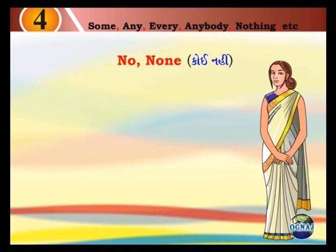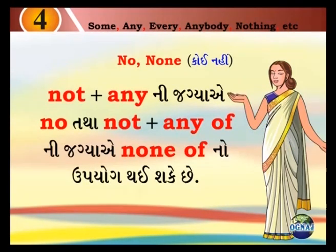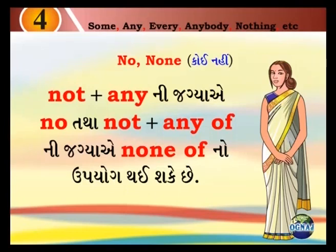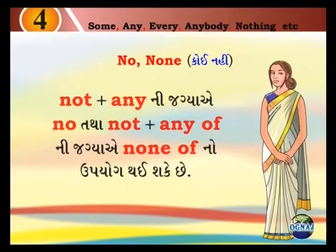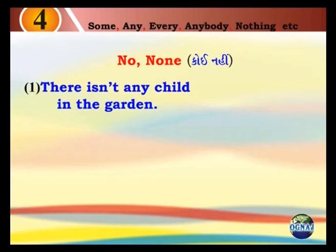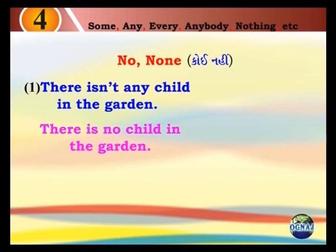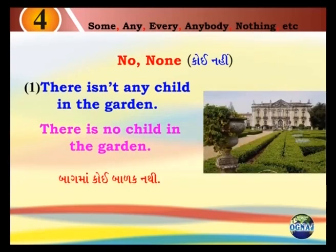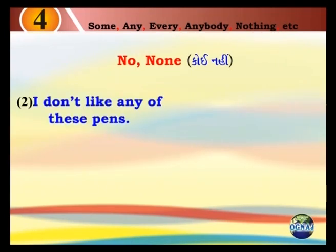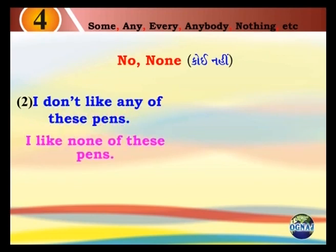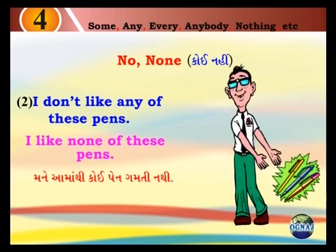None. Koii naathii. Not plus any nii jagehi aahe. None of nii upyog thai shakye chhe. 11. There isn't any child in the garden. There is no child in the garden. Bagma koi baalak naathii. 12. I don't like any of this pens. I like none of this pens. Manne aamadhi koi pen gamti naathii.